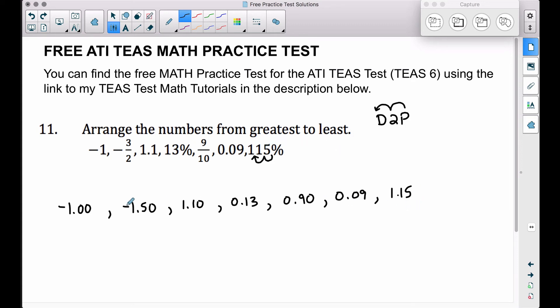So the biggest one we have up here is this dollar and fifteen cents, therefore 115 percent will be our greatest number. I'm just going to write them back in the same form that they were originally given. What's the next biggest one? I see a dollar and ten cents, and the dollar and ten cents matched up with this 1.1.